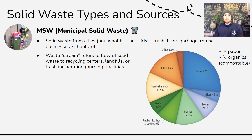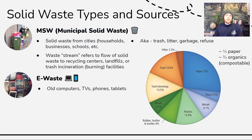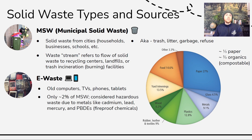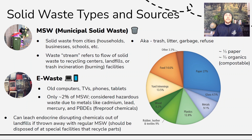One type of MSW we need to be specifically aware of is e-waste — electronics that are discarded, like old computers, TVs, phones, and tablets. Even though they make up only 2% of the MSW stream, they contain harmful metals or compounds that can be endocrine disruptors. These could be things like lead, cadmium, mercury, or PBDEs, which are flame-proofing materials. All of these can act as endocrine disruptors if leached out of landfills that contain e-waste.